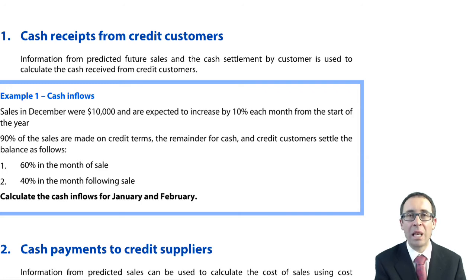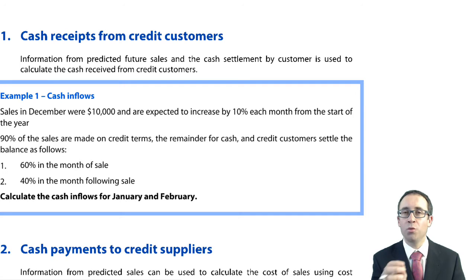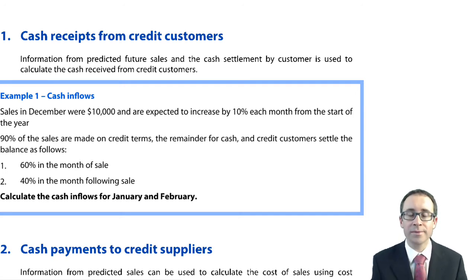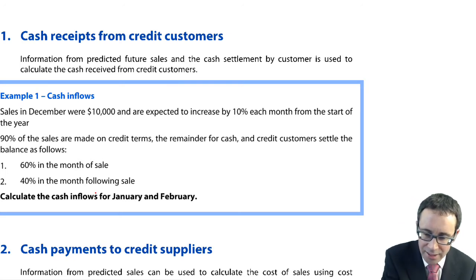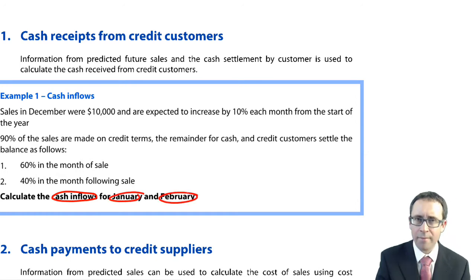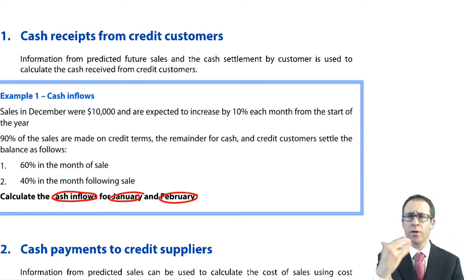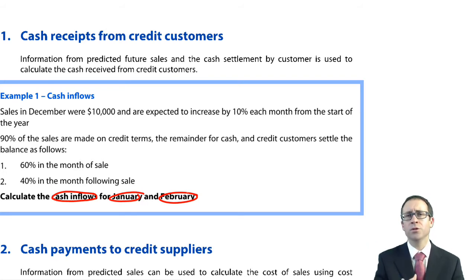It's a bit like making things out of Lego — you've got the instructions, it tells you what bricks to place where, and at the end of it all it looks like what it should. So let's look at Example 1. It says to calculate the cash inflows for January and February. We're going to start off with our sales figures, look at what's for cash, what's for credit, and once we've got the credit sales we can look at when the cash receipts arise.